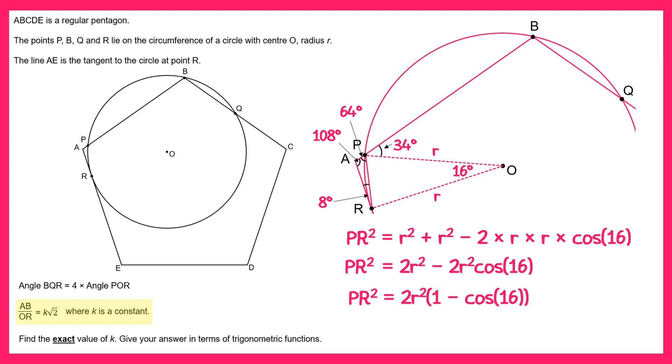Then if you square root both sides you'll find that PR is equal to the square root of 2 lots of R times the square root of 1 minus cos 16. Now we're going to need this in a moment so we'll pop it to the side.